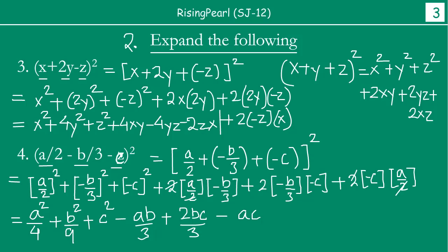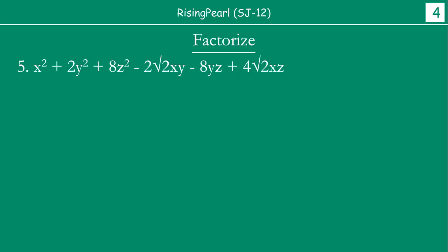Let us move on to some other examples. If we say factorize something like this, it looks very unusual because you have square root terms in it. But don't get distracted — keep your focus. You notice there are three variables: x, y, and z, and the maximum power is 2. This is some sort of application of Identity 5. To factorize means to write it as a product of two or three factors.